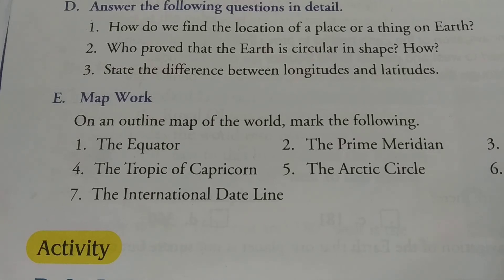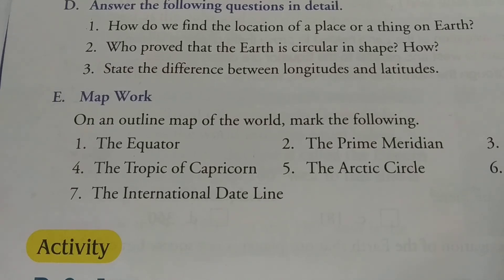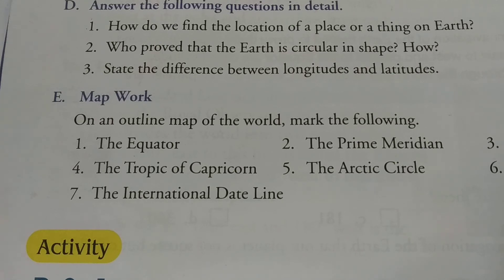I am repeating the answer — check your copy to see whether you have missed any point. You have made two columns: Longitude and Latitude. Under the longitude column, first point: 'Longitudes are known as meridians.' And in the latitude column, first point: 'Latitudes are known as parallels.' Full stop.